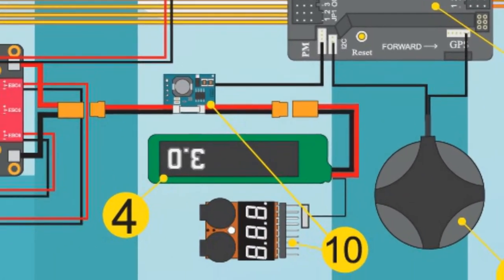Battery capacity is related to the flying time. The voltage should be according to the other components.